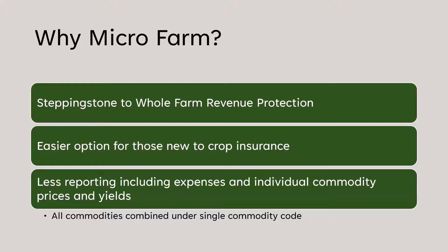With the regular whole farm policy, you'd have to list all your commodities, provide revenue per commodity, and give the price of each. With micro farm, instead of all that, you just give your total farm revenue — no prices required, no yields, and you don't even have to list what commodities you're growing.